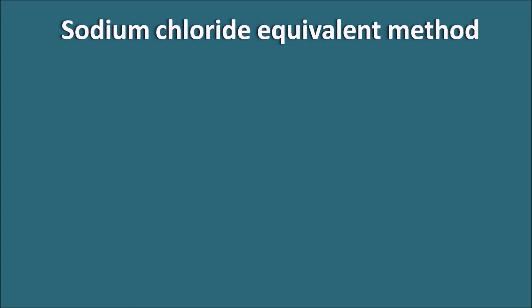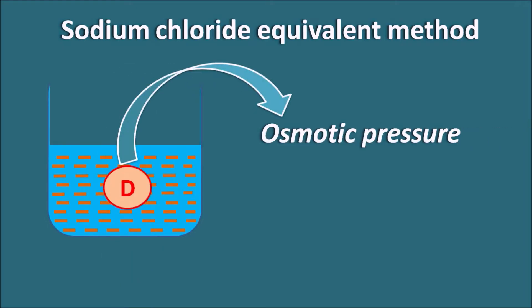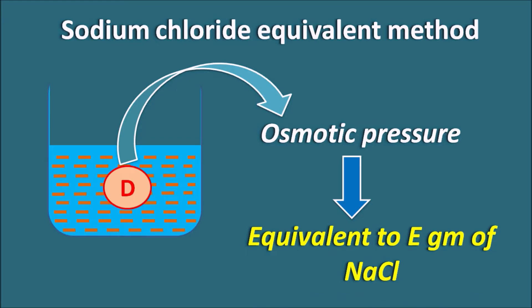What is the Sodium Chloride Equivalent Method? Suppose we have a drug solution — the drug is present and can exert osmotic pressure. We compare this osmotic pressure with that of Sodium Chloride, and relate it to the amount of Sodium Chloride which produces the same osmotic pressure. This value is called the Sodium Chloride Equivalent. Once we know this value, we can easily calculate how much Sodium Chloride is required to produce an isotonic solution.